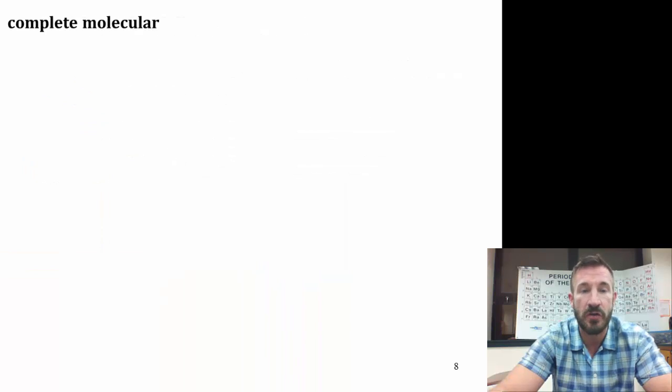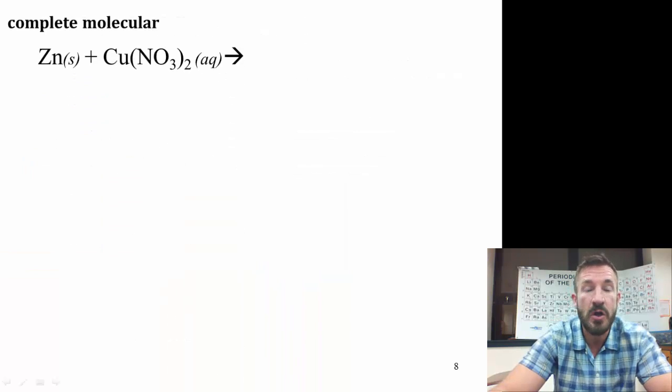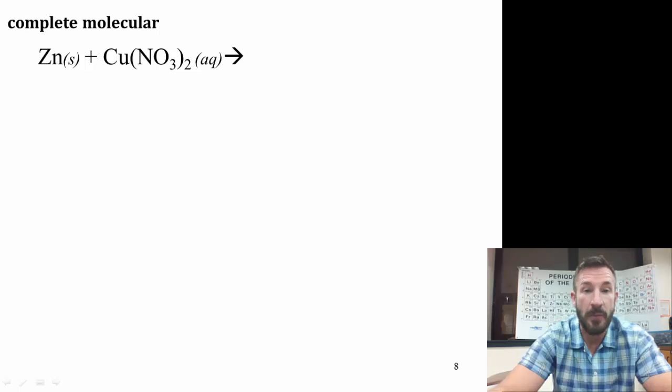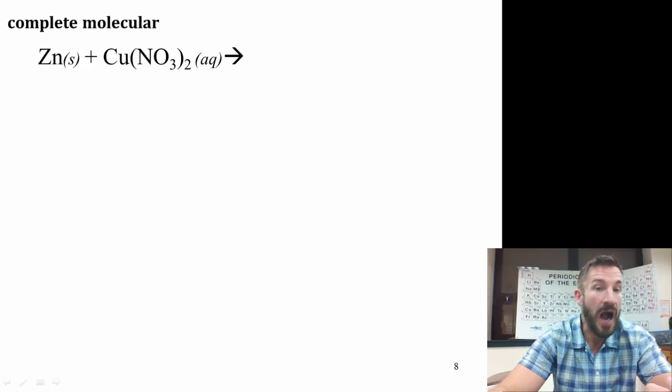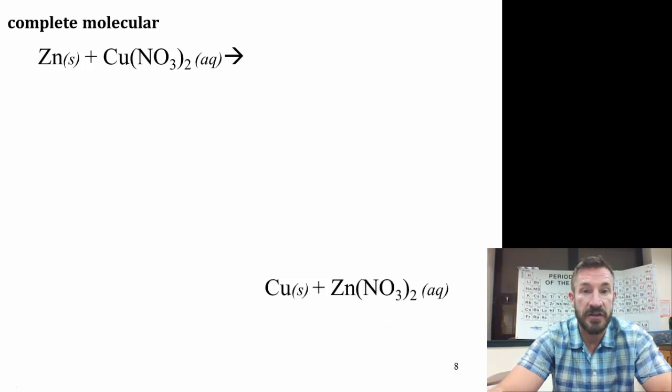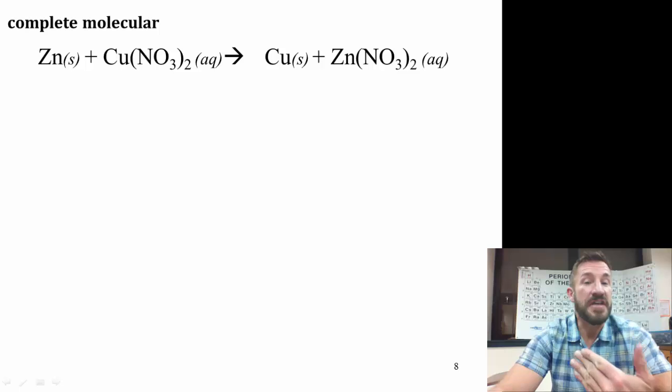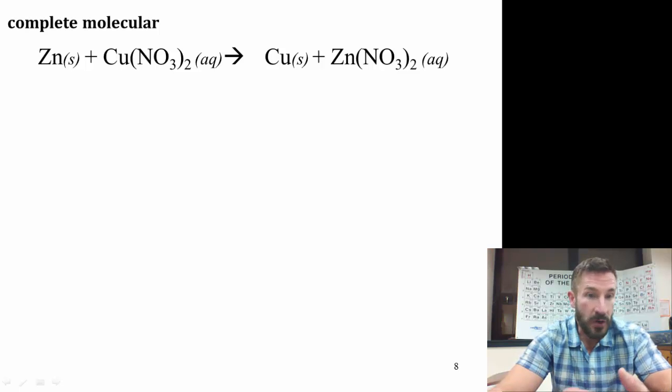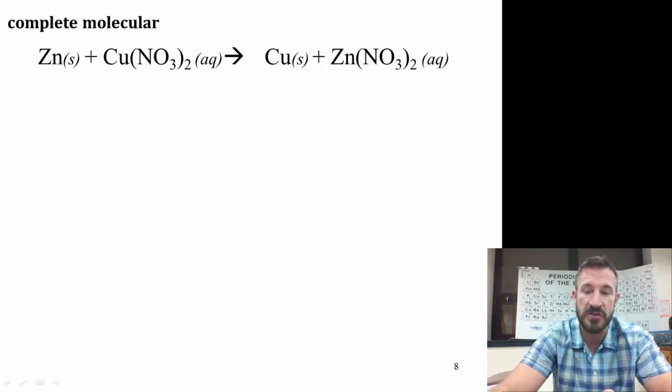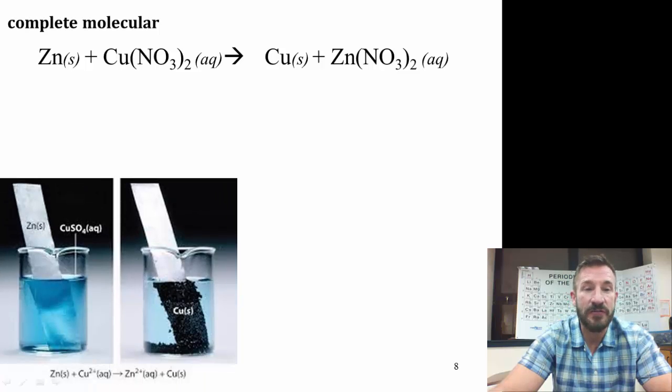Let's look at that a little bit more closely. So the complete molecular reaction for this would be zinc plus copper nitrate or copper 2 nitrate yields solid copper and zinc nitrate. Now notice the substances have the same charges they would always have. So zinc in a compound is plus 2, nitrate is minus 1. So you write the formulas the way you always would.